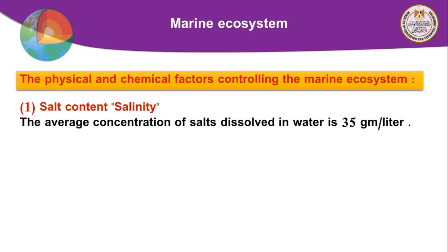Starting with the non-living factors, which include both physical and chemical factors — the first is the salt content, or what we call salinity. Salinity is the average concentration of salts dissolved in water, meaning the amount of salts in grams dissolved in one liter of seawater.